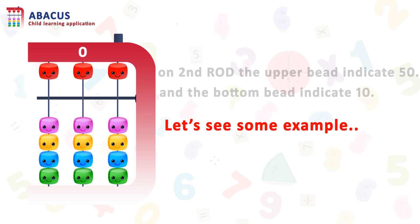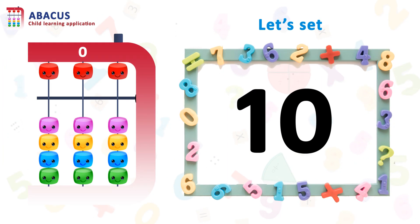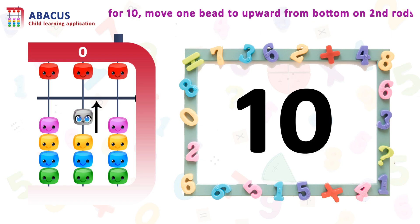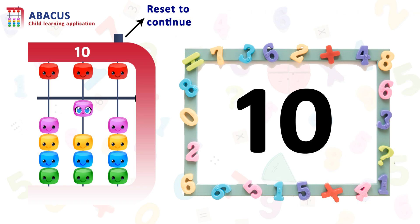Let's see some examples to get more ideas. Here we have the number 10. So let's set 10. For 10, we have to move one bit upward from the bottom on rod 2, which is the tens column.